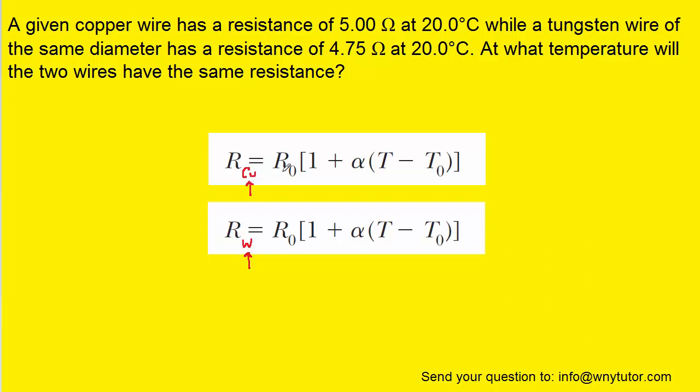Now because the question states that they have the same resistance, what we can do is take the expression for the resistance of the copper wire and set it equal to the expression for the resistance of the tungsten wire, so let's do that.